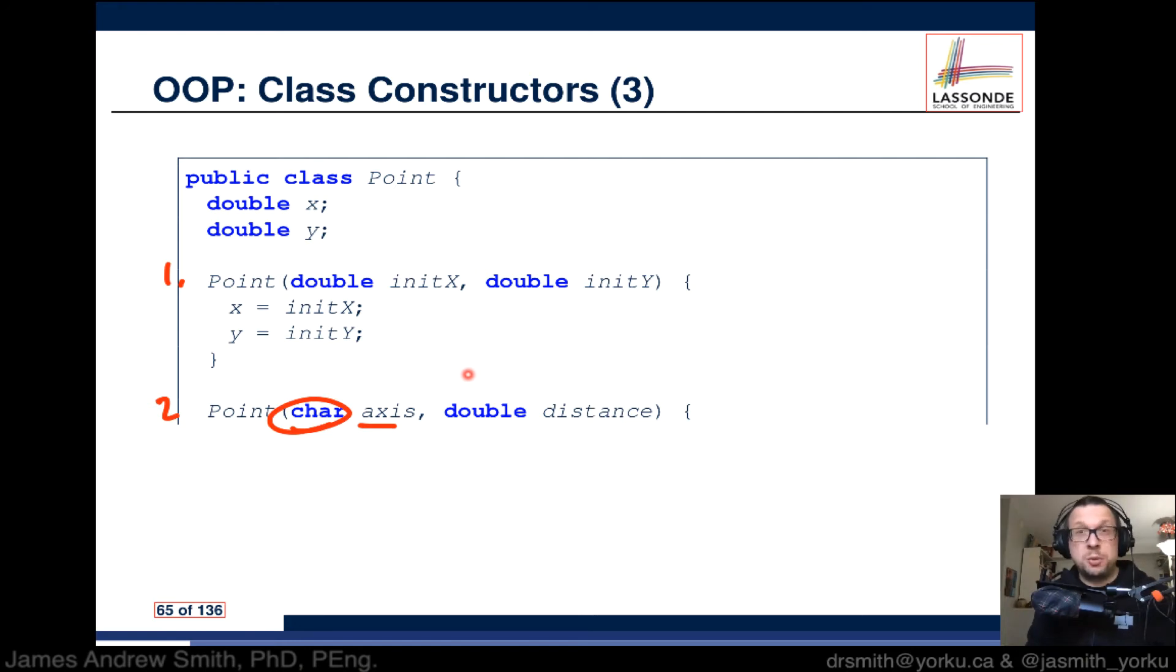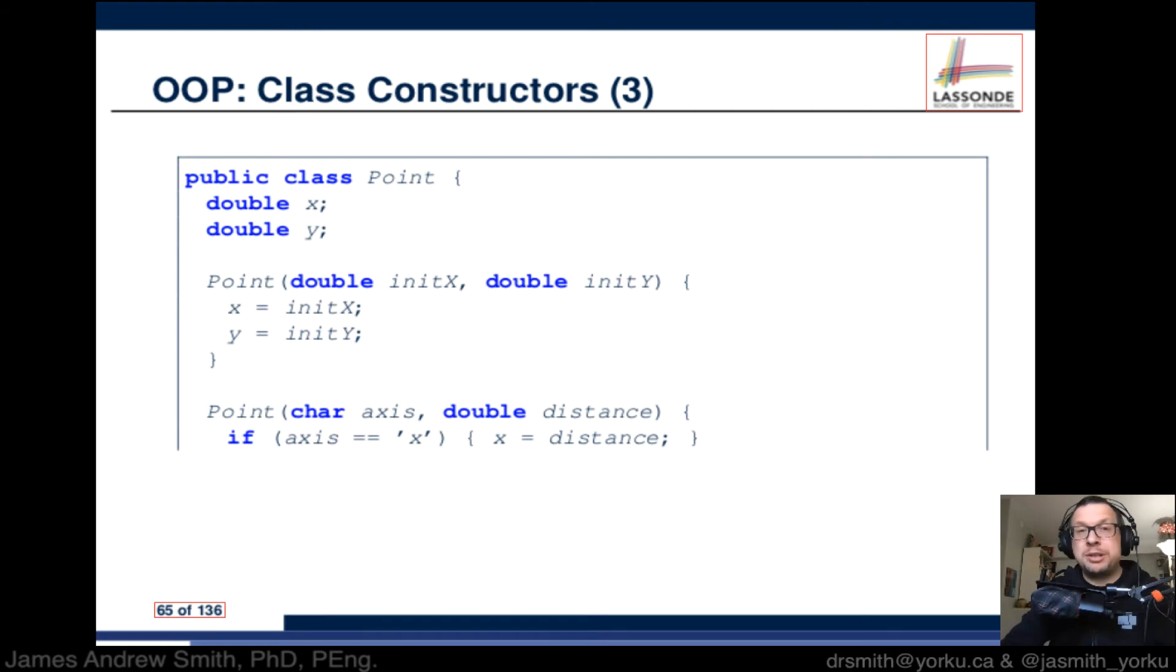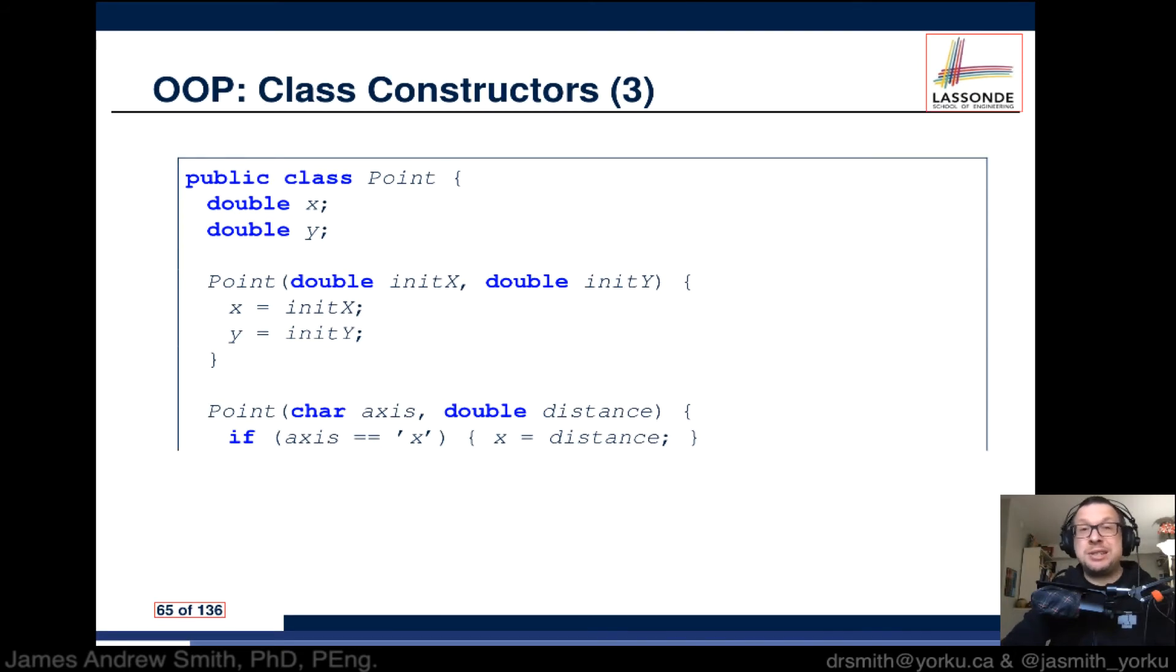That'd be another way of declaring or setting up a Point object. So we say if axis is x, basically we're saying you know that was x or maybe it was y, and then we say x is equal to the distance variable like that.